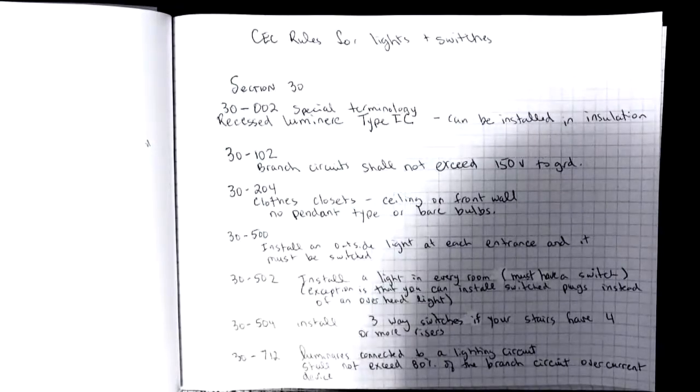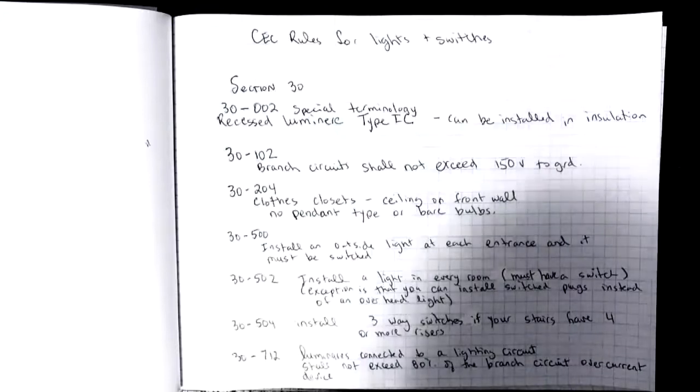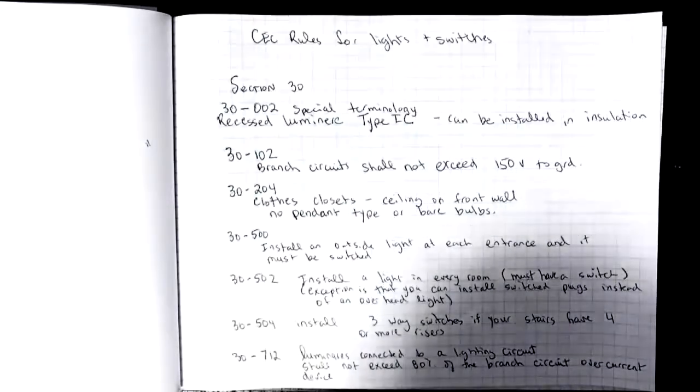The rule itself says luminaires connected to a lighting circuit shall not exceed 80 percent of the branch circuit over current device. Now there are some other rules in section 30.